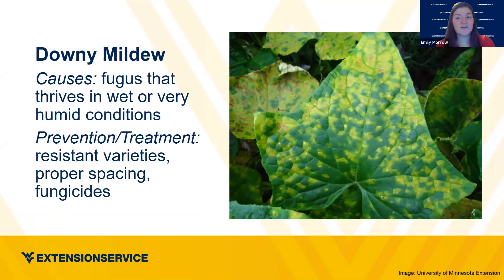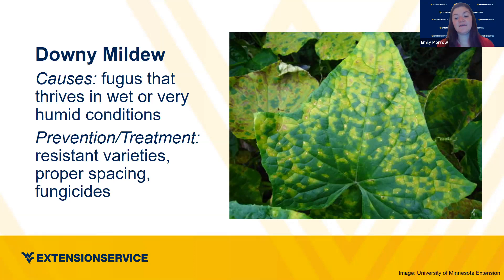Downy mildew is also really common. Again, wet or very humid conditions — there's quite a pattern here. We sometimes have really heavy rains and in the heat of summer, wet and humid conditions, so it's no surprise these come up in the garden. Prevention: resistant varieties, proper spacing. Anything that needs wet conditions to thrive as a fungus requires proper airflow between plants to help prevent it from even becoming an issue. There are resistant varieties and fungicides to help prevent it, more commonly used in commercial settings where livelihoods depend on these crops.